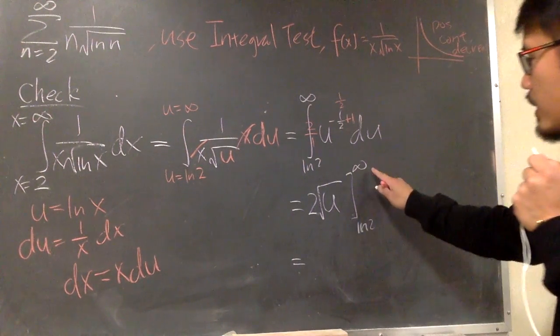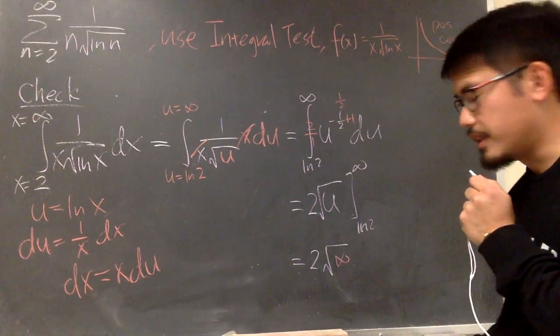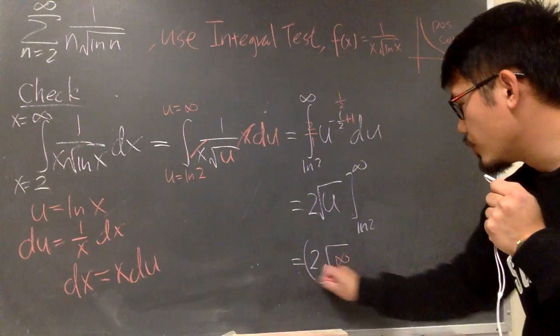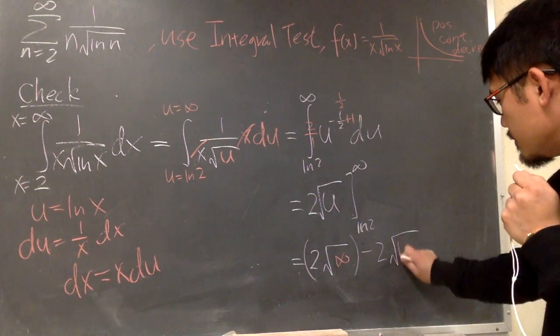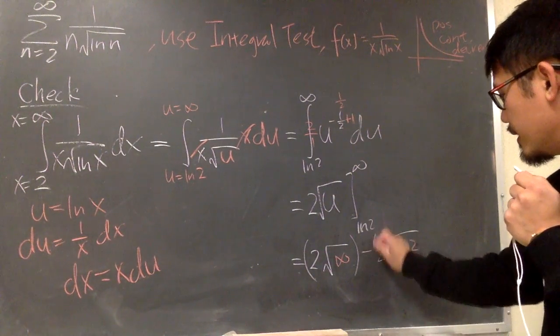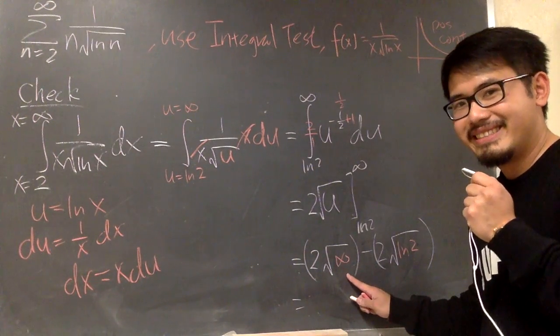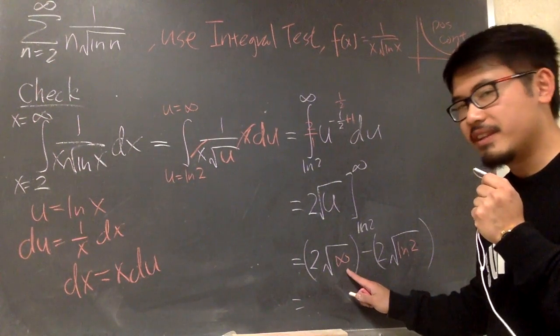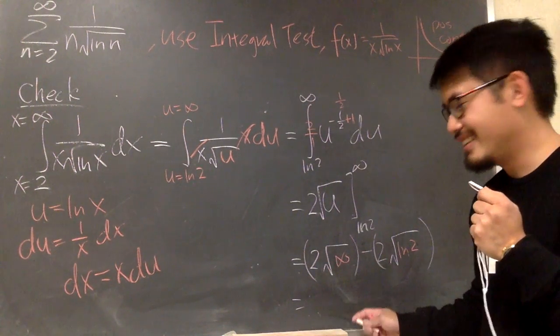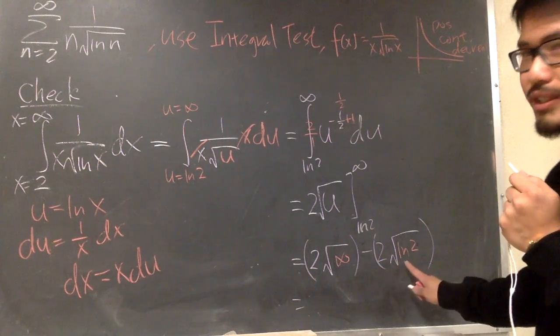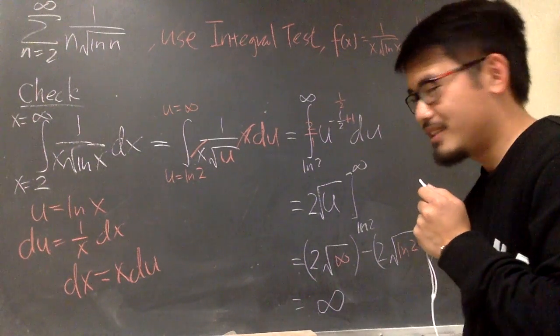And as we can see, I'm just going to plug infinity into here. We have 2 square root of infinity, and then we will minus 2 and plug in ln 2 right here, square root of ln 2 like this. This is what? Infinity inside. Square root of infinity is still infinity. 2 times infinity, it's even bigger infinity. It's infinity. Minus, this is just finite. Infinity minus the finite value is still infinity.